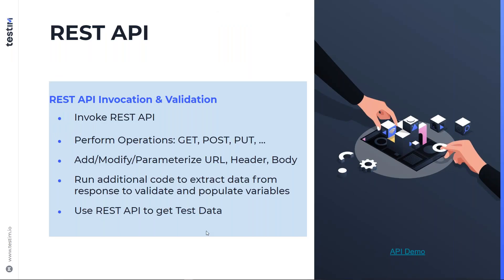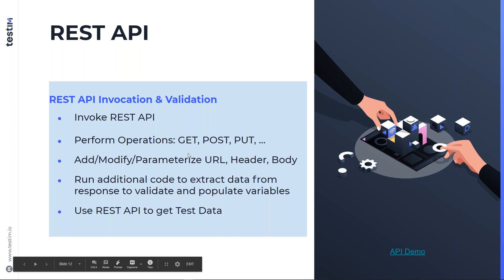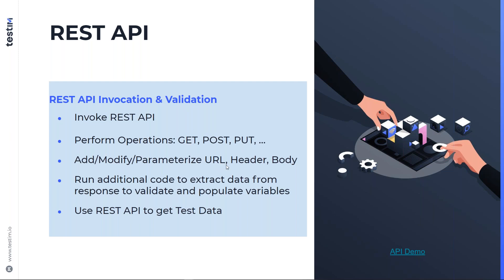Testim allows you to invoke REST APIs — very similar to Postman. It allows you to invoke REST APIs, fetch the response, and process it to extract parameters and populate your variables. You can perform operations like GET, POST, PUT, and you can add, modify, or parameterize your URL, header, and body. You can also run additional code to extract data from the response to validate whether the API call was successful and populate variables for use in subsequent test steps. REST API can also be used to get your test data.